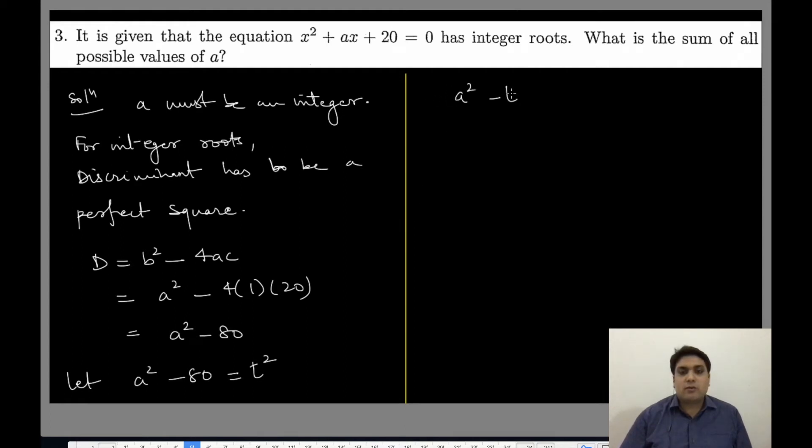If it is a perfect square, can I say that a² - t² equals 80? That means (a + t)(a - t) equals 80.